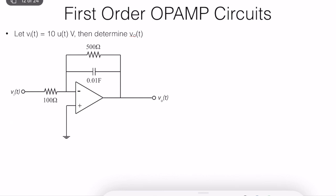For example, in this example we have an op-amp, and as you can see, we have a capacitor and two resistors. The input voltage is given as 10 times U(t). U(t) is the step voltage, which means that Vi(t) equals zero when t is less than zero, and Vi(t) equals 10 when t is greater than or equal to zero.